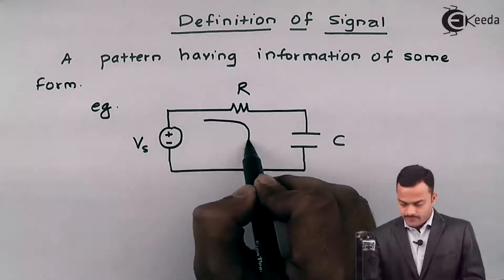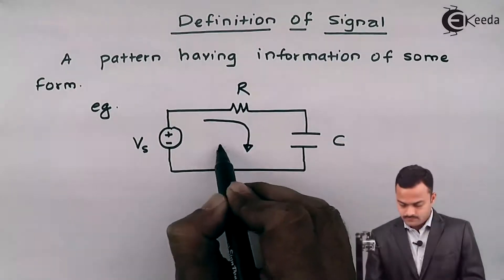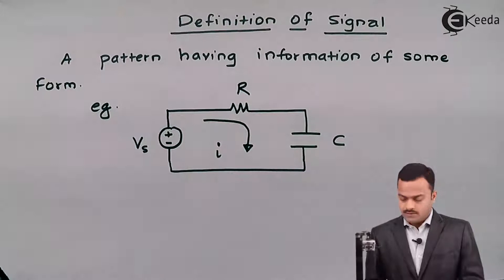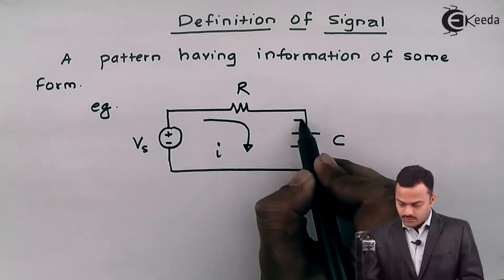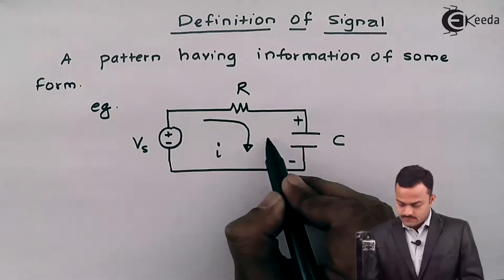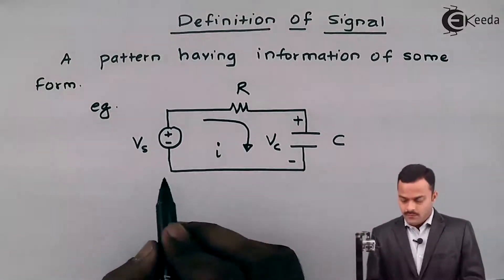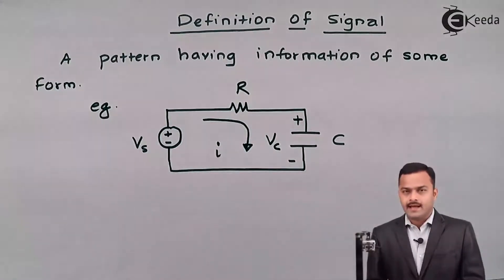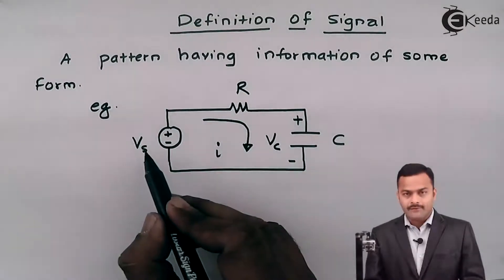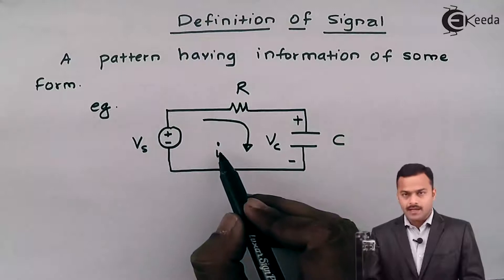There will be a current I flowing and that will develop a voltage across capacitor. We see now in this case I can have a pattern or a graph for supply voltage, supply current, and capacitor voltages.